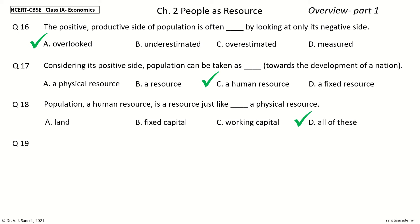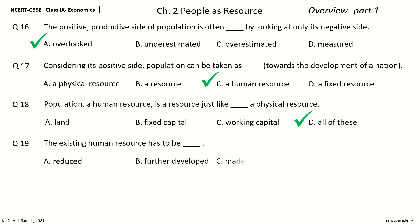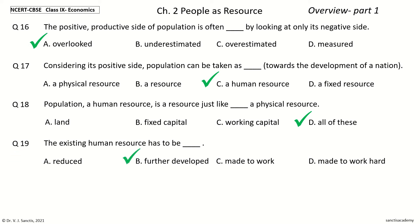Question 19: The Existing Human Resource has to be ___. The options are: Reduced, Further Developed, Made to Work, Made to Work Hard. Your time to choose. And the answer is: Further Developed. So, the Existing Human Resource has to be Further Developed.